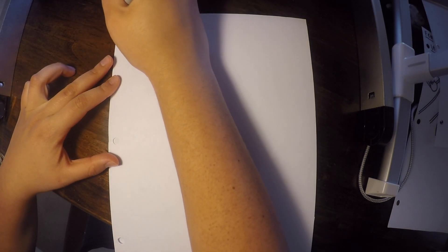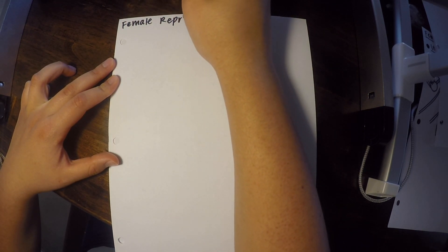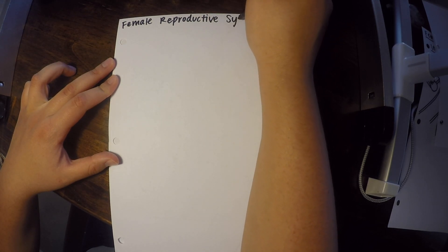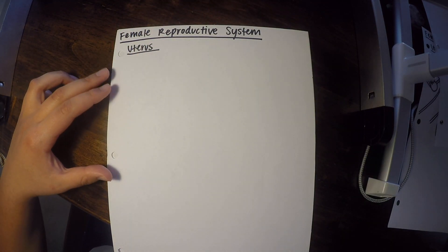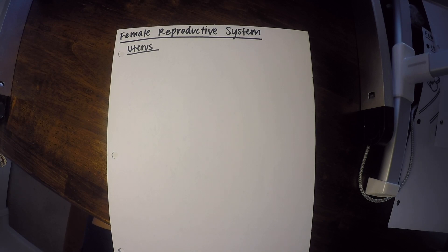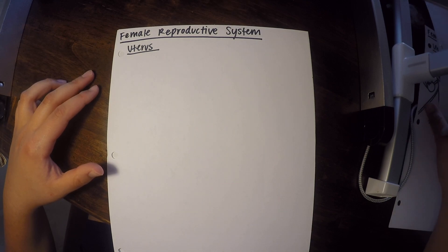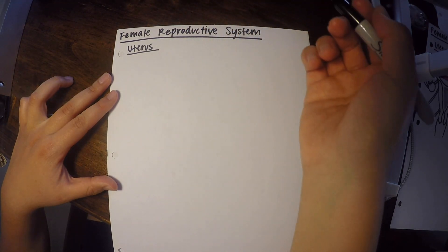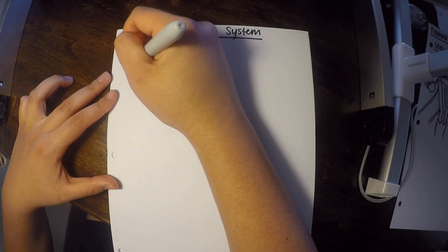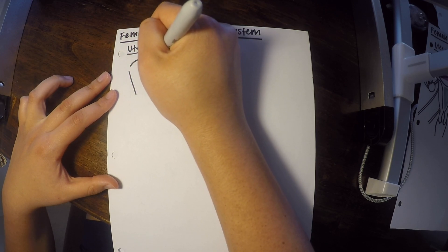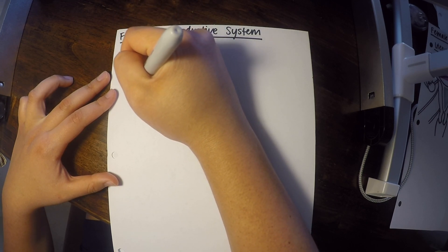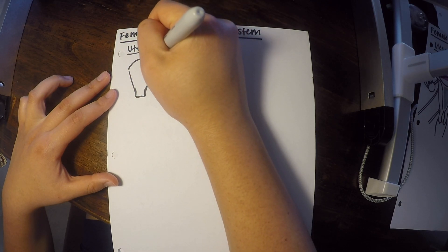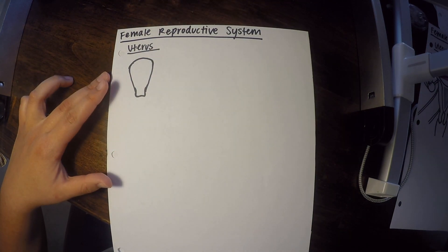This wraps up the male part of our reproductive system. Now let's move on to the female reproductive system. We're going to start with the uterus. I'm just going to draw a little tiny uterus first so you can see what the main parts are, and then I'll draw a more detailed structure.